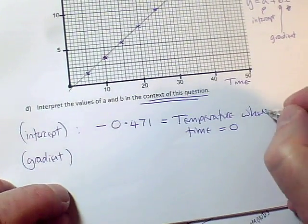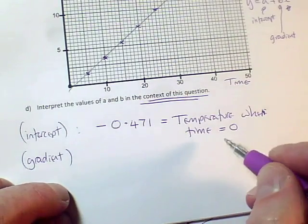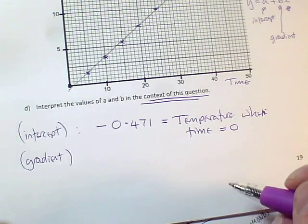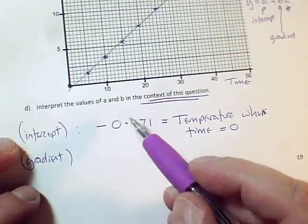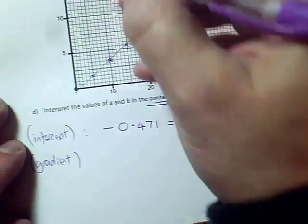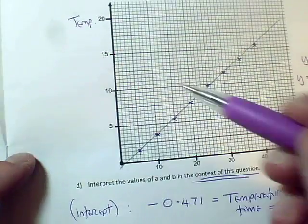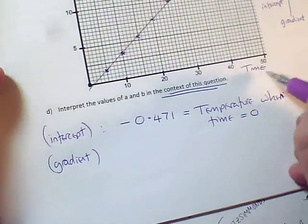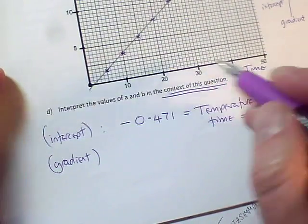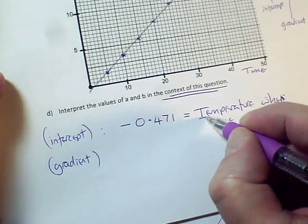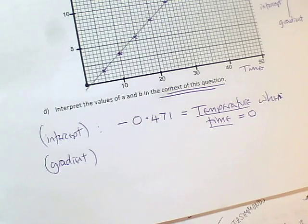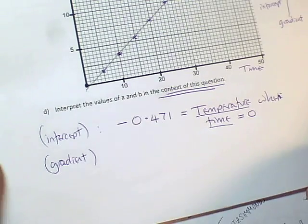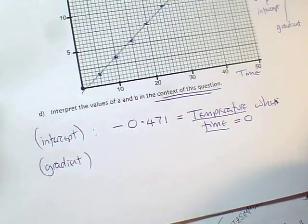You can actually say this in a nicer way, you can say it's the initial time. But if you learn this as a template, if you say that you quote the value and then say this is whatever that says on the vertical scale, when whatever this variable is on the horizontal scale equals 0, all you need to do is change the words temperature and time to the names of the variables in your question. And you have a contextual interpretation of the intercept.